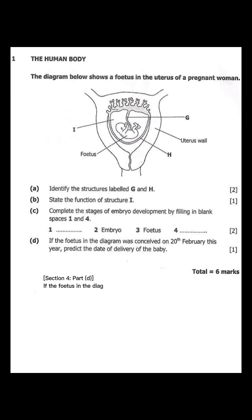Section 4, Part D. If the fetus in the diagram was conceived on the 20th of February this year, predict the delivery date. This question requires some simple calculations. The average pregnancy lasts 40 weeks, or about 9 months. So, count 9 months from February 20th. February to November equals 9 months. The predicted delivery date is the 20th of November.